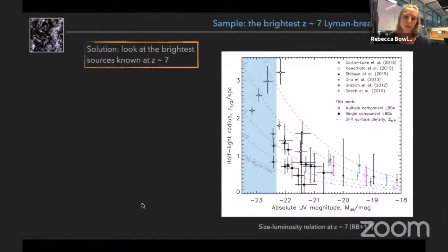So the solution I propose to this problem is to look at the very brightest sources we know at redshifts around seven. And as you can see on the right here, the size luminosity relation, the very brightest sources are highly extended in this Hubble data measurements.